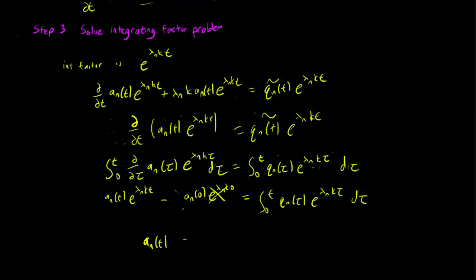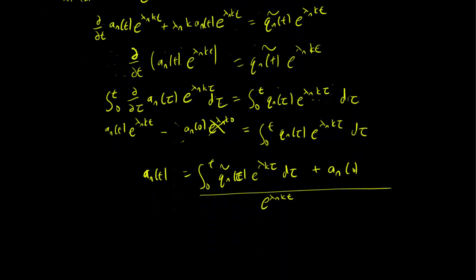We have a_n(t) equals to that integral from 0 to t of q tilde_n(tau)*e^(lambda_n*K*tau) d tau, plus a_n(0). But here we are going to divide everything by e^(lambda_n*K*t). So everything here divided by e^(lambda_n*K*t). And this is our a_n(t).